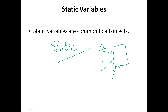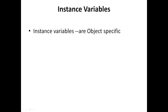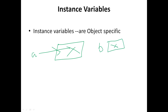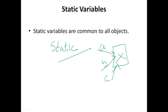For example, objects A1, B1, and C1 all access the same static variable X. This is different from instance variables, which are object-specific — each object gets its own separate memory block. But for static variables, a common block of memory is assigned and all objects access that common block.